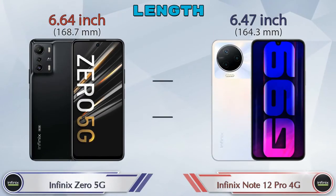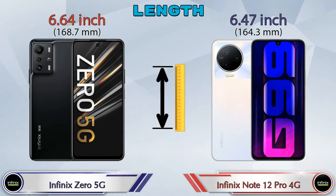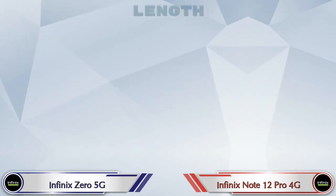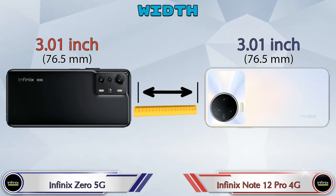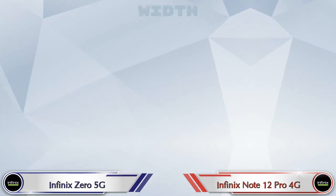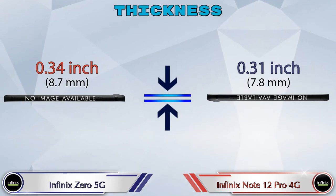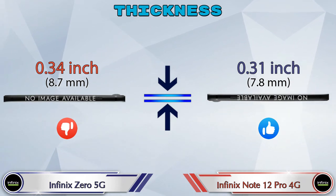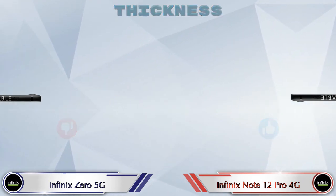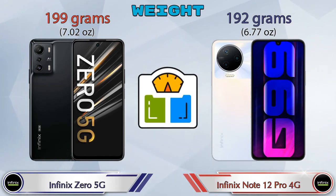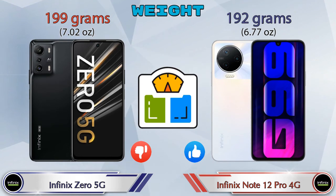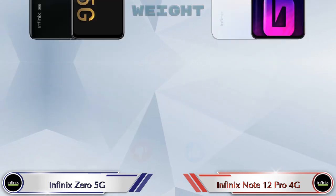Talking about the length of both phones: the Zero 5G has a 6.64-inch screen and the Note 12 Pro 4G has 6.47 inches. Width is the same in both at 3.01 inches. Thickness: the Zero 5G is 0.34 inches and the Note 12 Pro 4G is 0.31 inches. Weight: the Zero 5G is 199 grams and the Note 12 Pro 4G is 192 grams.